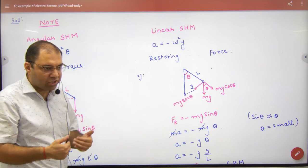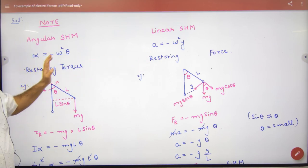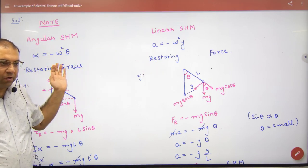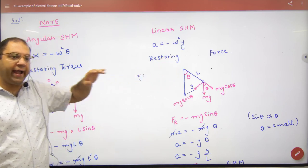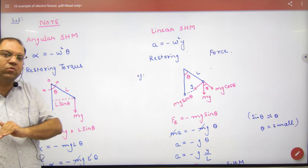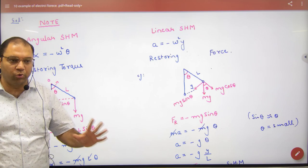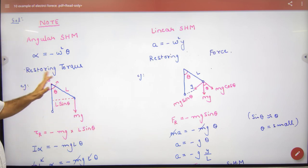In angular SHM, where A is alpha, omega is omega, y displacement, linear becomes angular, which is theta. So alpha equals minus omega square theta. This is the equation of angular SHM. And in angular SHM, if we want to prove anything, then we need restoring torque.